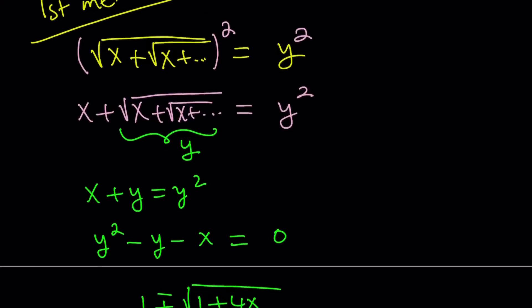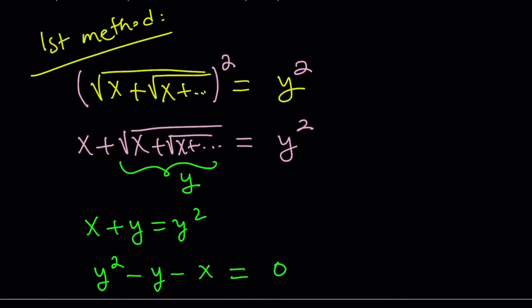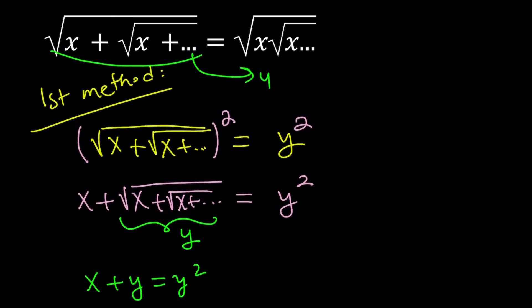One thing we probably forgot to mention here, when we set this expression equal to y, we had to say that y is greater than 0. Obviously, x is positive in this case, even though we didn't mention that. Let's just say that right now. x is positive. If x is positive, then this quantity is also positive.